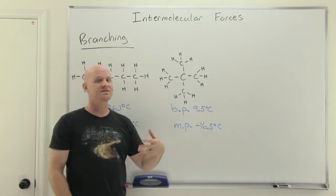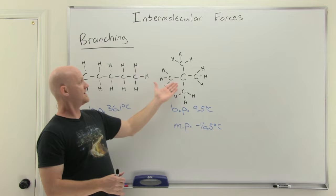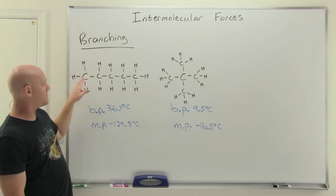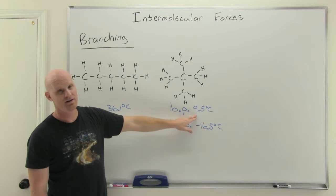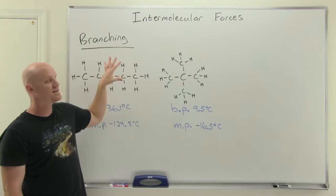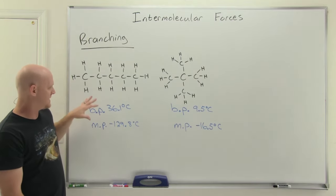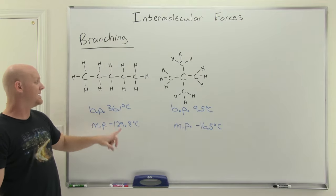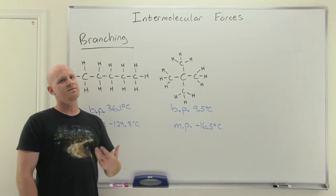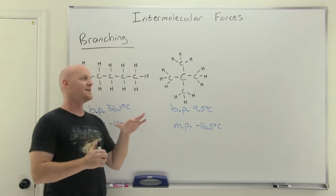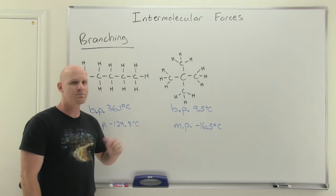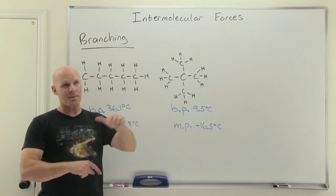We usually only compare branching when you have two isomers with exactly the same molecular weight. The boiling point of the unbranched one — with more surface area — is higher than the boiling point of the branched one. Melting points get a little funky: normally melting point and boiling point trends go together, but with branching, sometimes they don't. The branched and possibly more symmetrical structure packs into a crystal better, so it actually freezes and melts at a higher temperature. So branching lowers the boiling point but can increase the melting point — though the melting point trend has numerous exceptions.